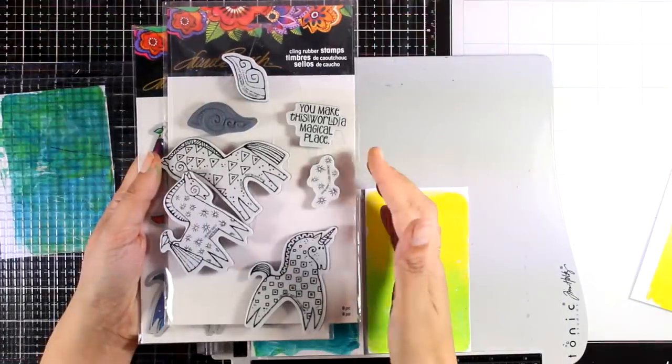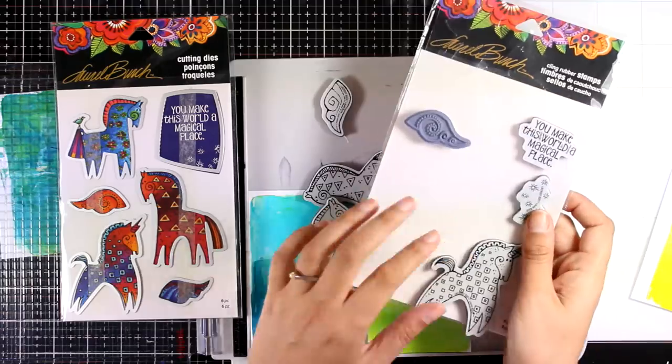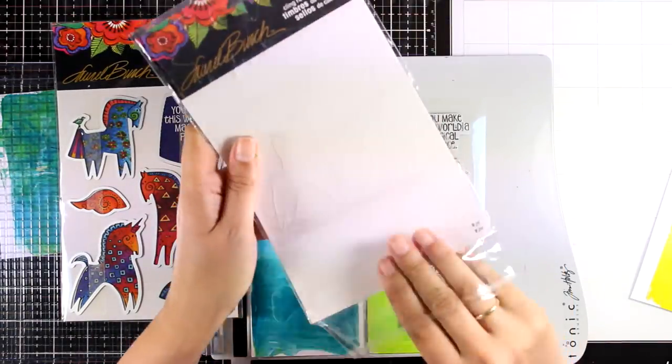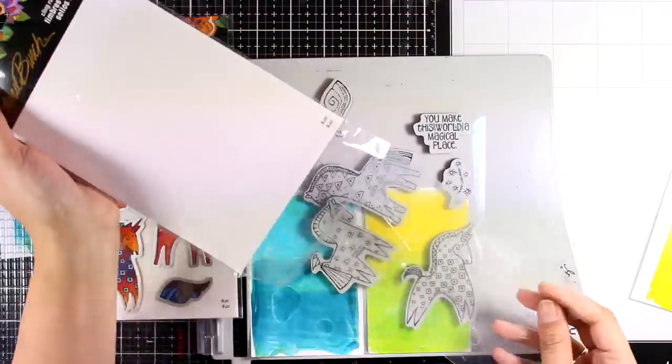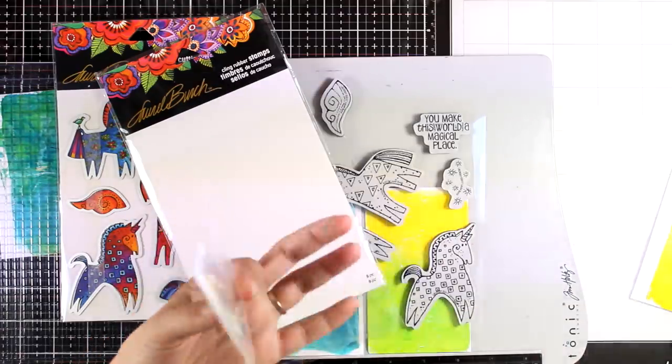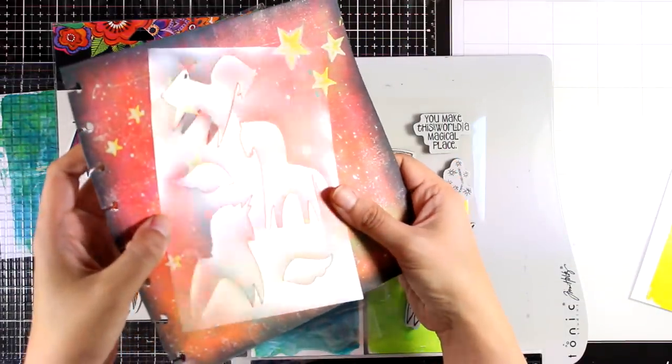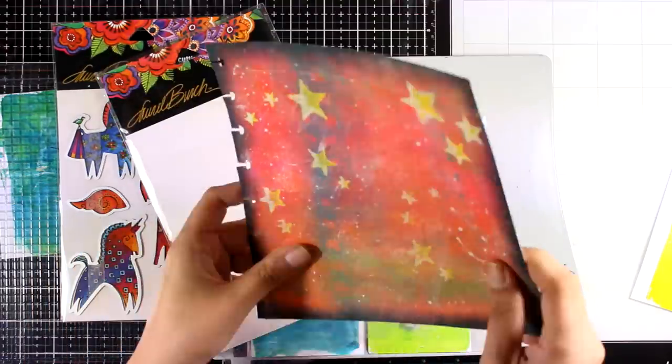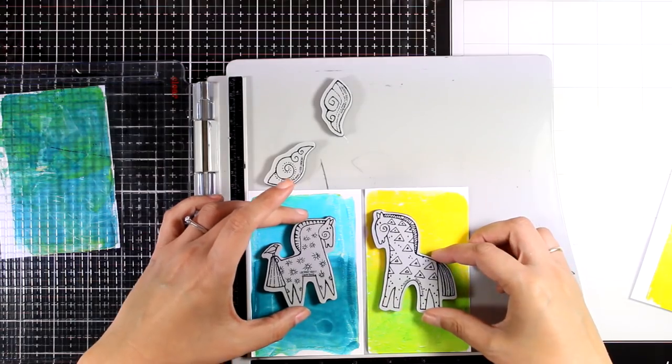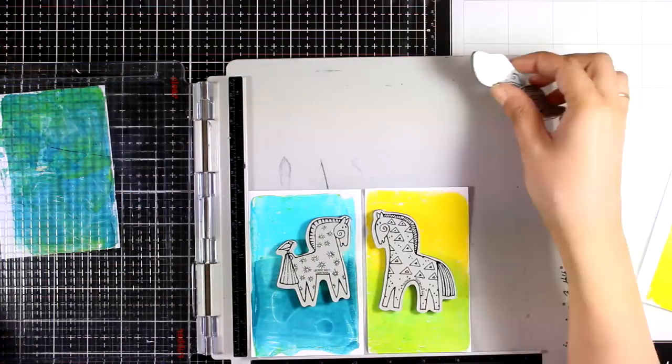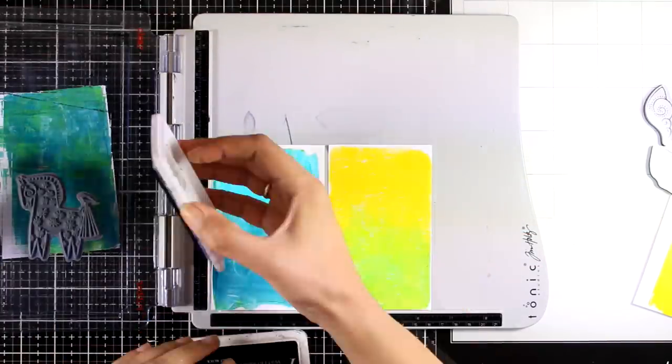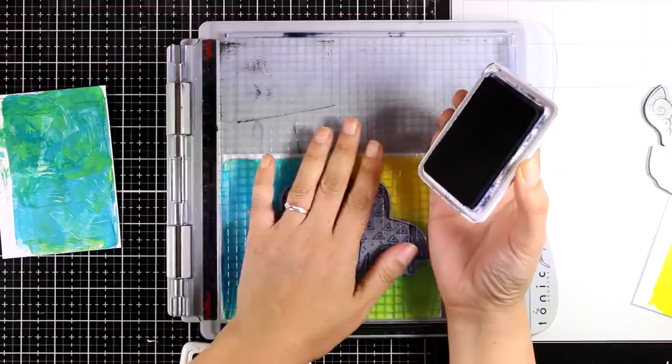Now for my focal points I'm going to use stamps by Stampendous. These are the Magical Horses and I'm going to stamp a couple of them. I like that this stamp set comes with a stencil. I'm not going to use it today but I wanted to show you that you do get the positive and the negative of those horses. Now I'm going to use my stamping platform and I'm going to stamp both my horses at the same time.